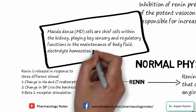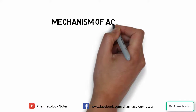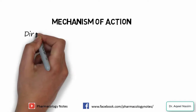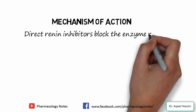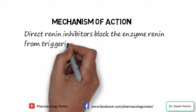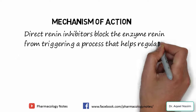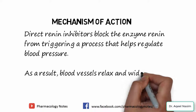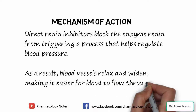Now let's discuss the mechanism of action of direct renin inhibitors. Direct renin inhibitors block the enzyme renin from triggering the process that helps regulate blood pressure. As a result, blood vessels relax and widen, making it easier for blood to flow through, which lowers blood pressure.